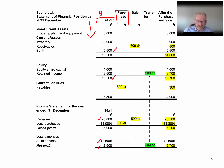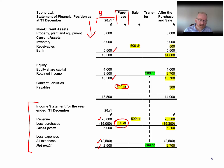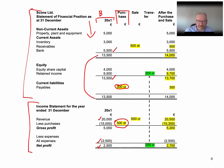For the purchase on credit: we debit purchases with 300 — the amount of the purchase — but rather than crediting bank, we credit the payables account in the statement of financial position. The income statement section and the statement of financial position section are shown separately. The statement of financial position still balances. We now have a 300 euro liability and a 300 euro cost that we didn't have before.